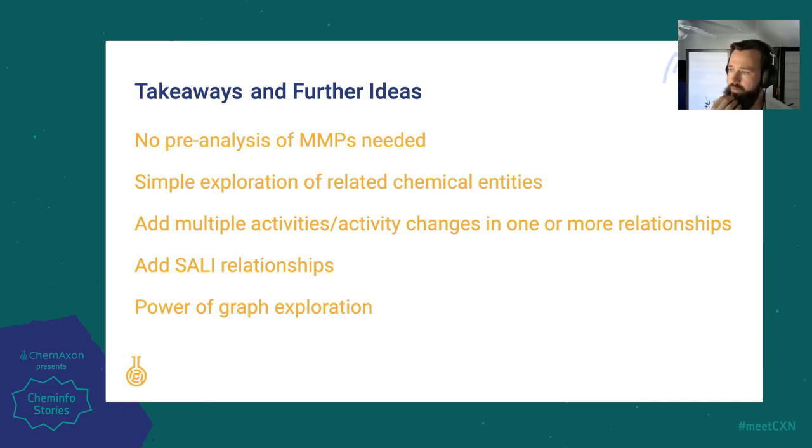I'd like to wrap up now and just look at a few takeaways or future ideas that I have. First of all, when running a typical MMP analysis, you often have to run a lot of searching first and create your graph based upon the results. The nice thing about this model is we can create a much more general MMP analysis without worrying about everything in the first place, and then use the more visual interrogation of a graph model in order to overcome that hurdle. It's very simple to explore the relatedness of the chemical entities. We could even envision adding multiple activities or activity changes in one relationship, or simply adding more relationships. As we mentioned before, the addition is arbitrary.